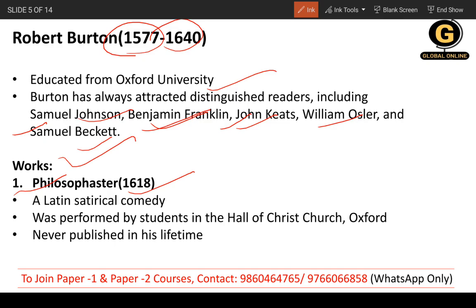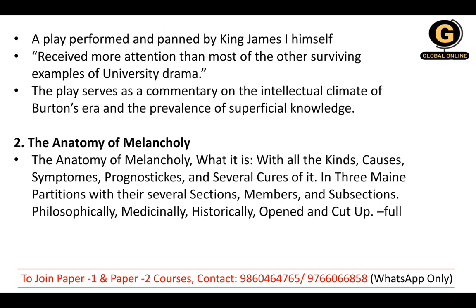Robert Burton's first work is Philosophaster — published in 1618, a satirical Latin comedy. It was first performed by students in the hall of Christ Church, Oxford. Philosophaster was never published during Robert Burton's lifetime; it was edited and published by an editor after his death.